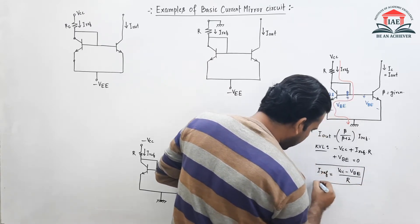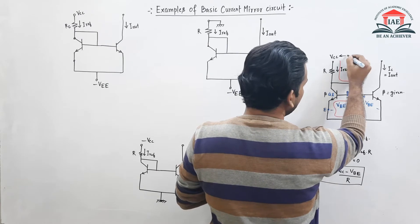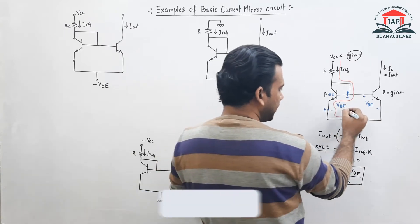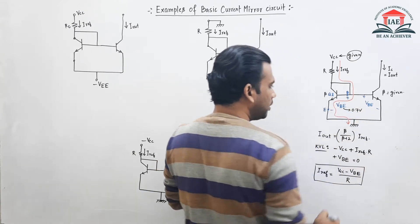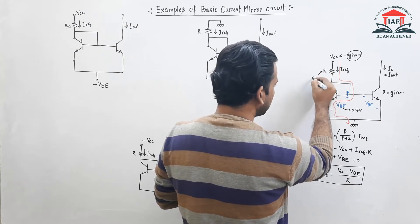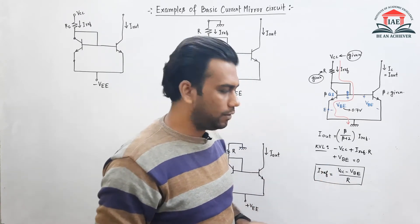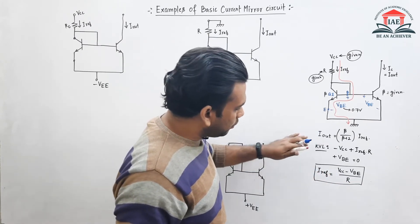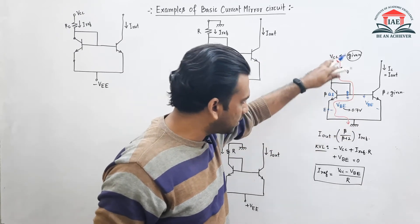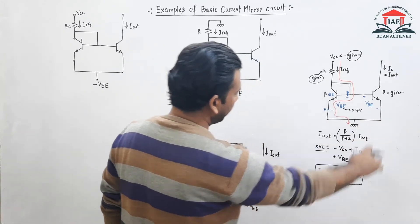So I reference equals VCC minus VBE, divided by R. The VCC value will be provided in the exam. VBE is 0.7 volts since the transistor operates in the active region. The resistance R will also be given. This completes example number one — we apply KVL and solve for I reference, then compute I out.